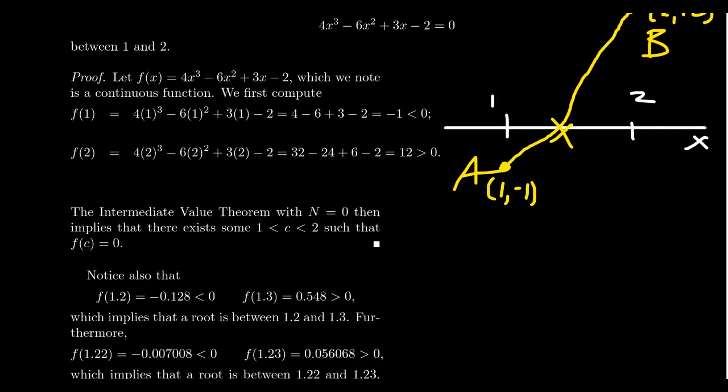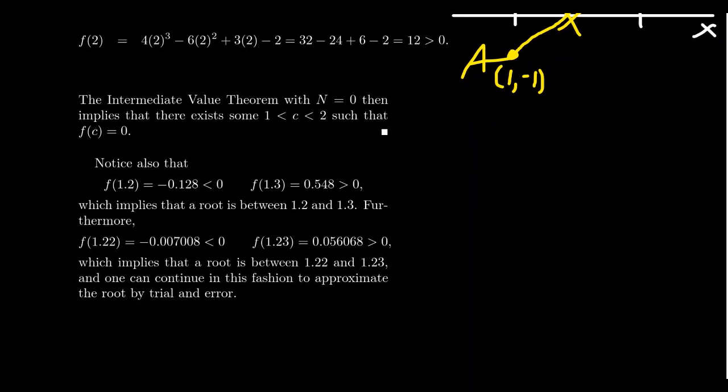Now the Intermediate Value Theorem does actually provide a technique for which we can approximate the solution. We know there's a solution between 1 and 2. Well, what if we got a little bit closer? Notice that f(1.2) is -0.128. That's negative. If you take f(1.3), that's 0.548. That's positive.